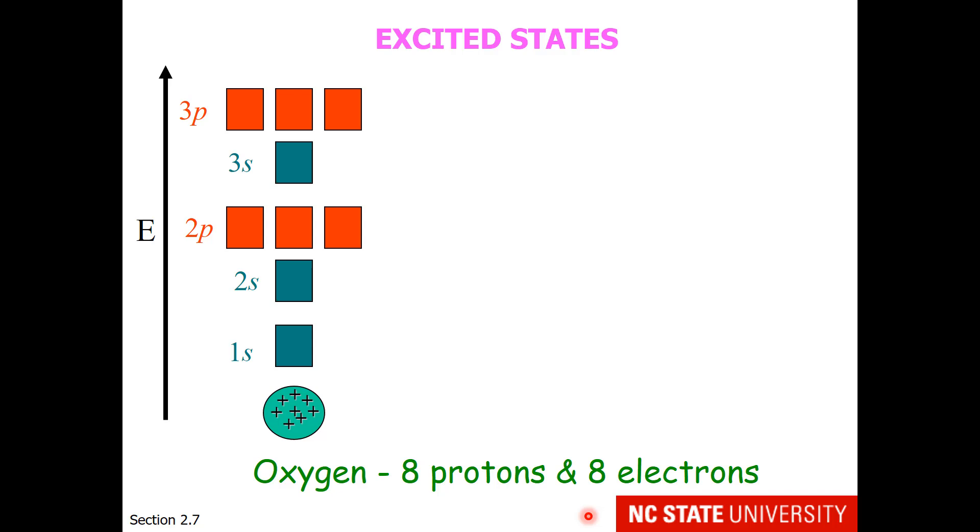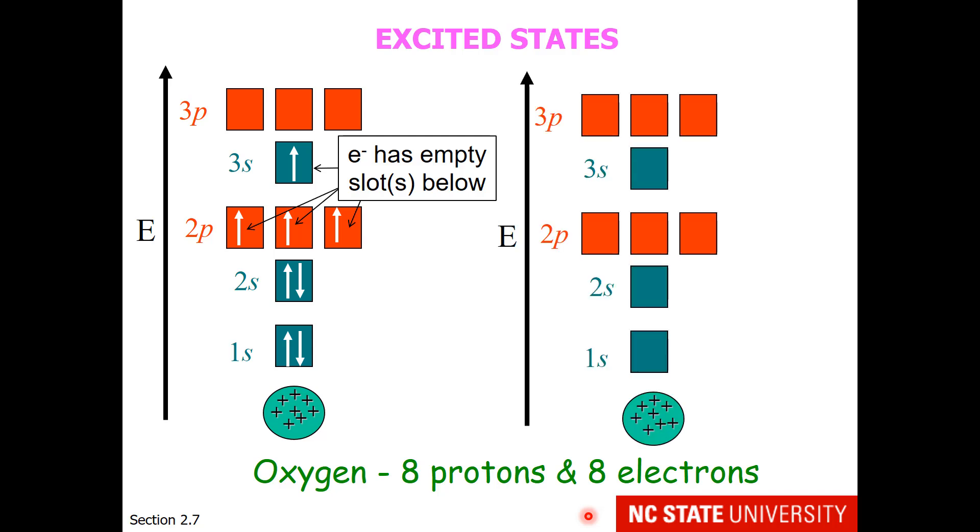Here's an example of some excited states. Electron one, two, three, four, five, six, seven, eight. Clearly this is an excited state because we have an electron in the 3s orbital, yet we have empty slots below it. So if we could flip that electron spin and tuck it into a 2p orbital, that would move us from excited state to ground state.